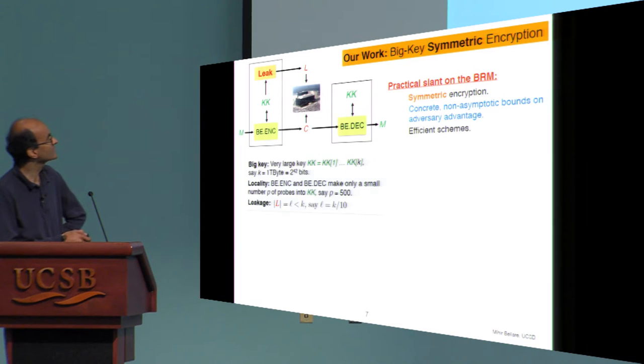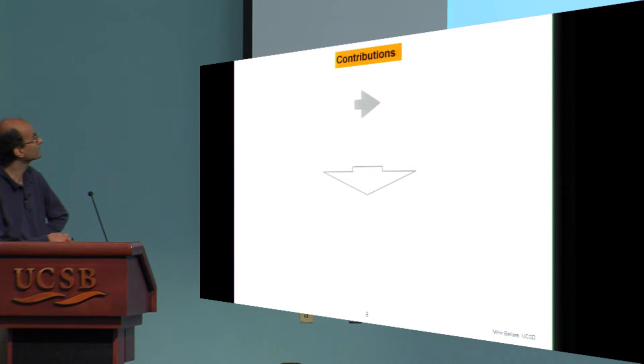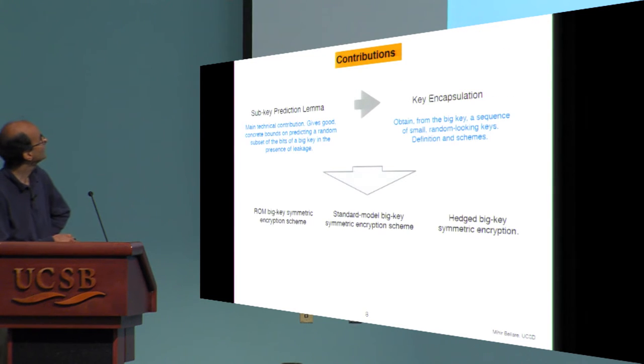We want in this context to give schemes that are not only efficient, but we want to give concrete non-asymptotic bounds on adversary advantage, which, of course, translates also to efficiency since you can use smaller parameters and you know exactly what you're getting. And we're willing in this context to use the random oracle model, unlike the prior theoretical works.